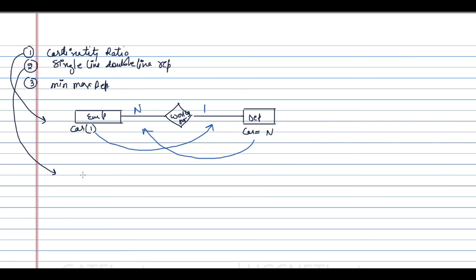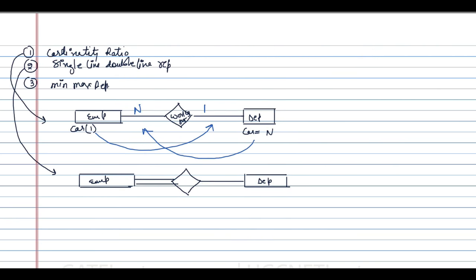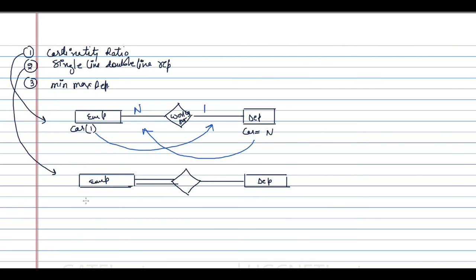In the single line and double line representation, we look at which side has total participation. Total participation occurs when the minimum cardinality at a particular site is 1. The participation of employee is 1 and the participation of department is 0, so employees are totally participating in this relationship, which is denoted by a double line.